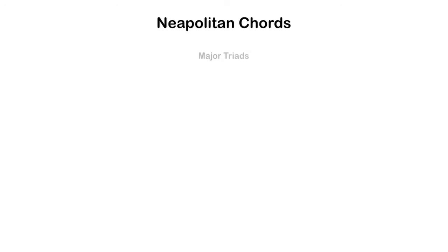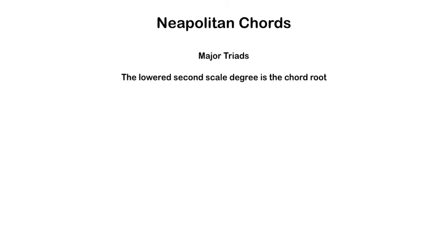A Neapolitan chord is a major triad whose root is the lowered second scale degree. When we start spelling it, we find the lowered second scale degree in the key and spell a major triad above that. These chords tend to be considered native to the minor mode — they show up more frequently in the minor mode, and when we see them in the major mode we tend to think of them as borrowed chords.